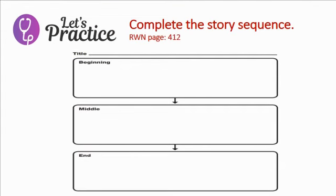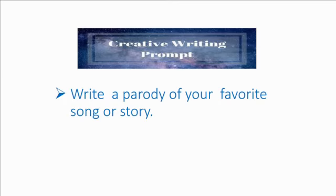Let us practice now. Open to page 412. Here you can see the story sequence. You think about a story and you imitate it — you can change it and make it a parody. You have a title, a beginning, middle, and end. Finally, you have an assignment: Creative Writing Prompt. Write a parody of your favorite song or story. Think about your favorite song or story that you remember, imitate it, and write it as a parody.